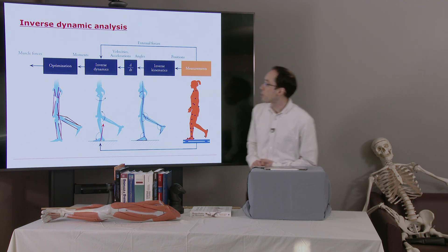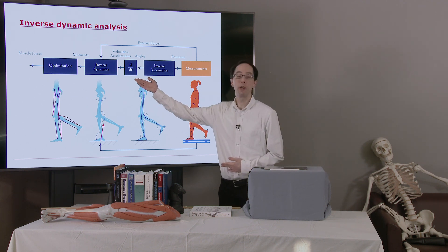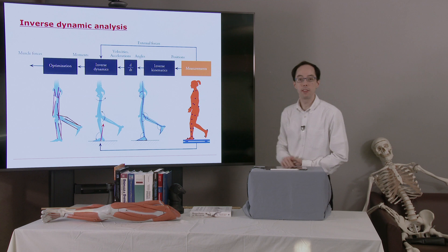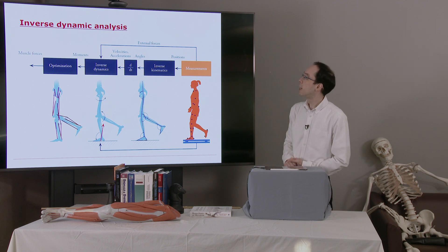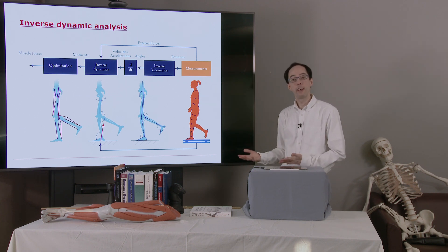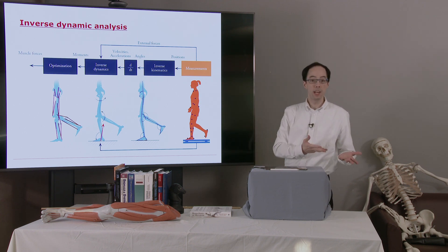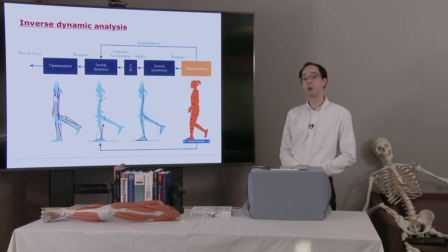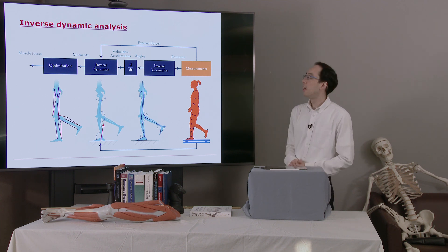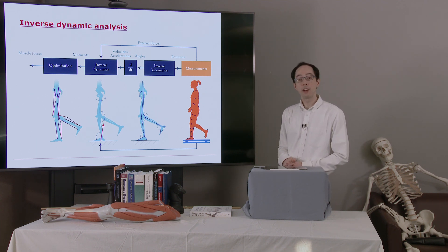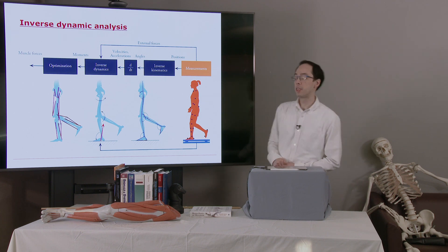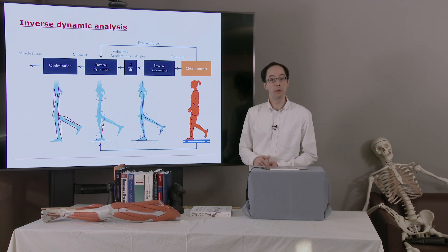One question you might ask is why do we have a derivative block here — why do we need to take derivatives? Well, if you think of Newton's second law, F equals ma, we have the analogous equation in the rotational domain. And so we'll need angular velocities of our joints to compute the net joint moments.